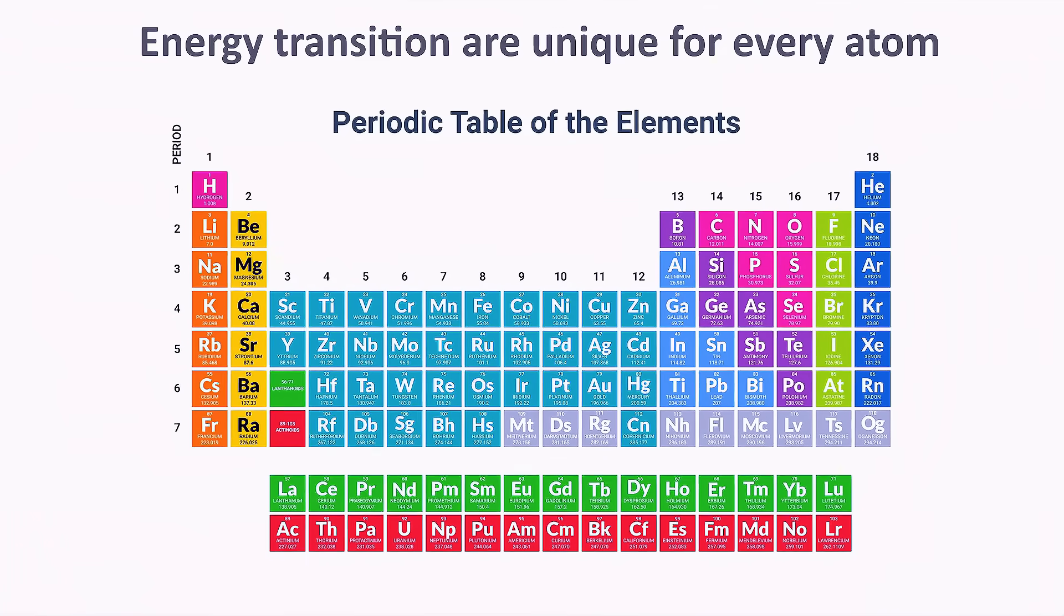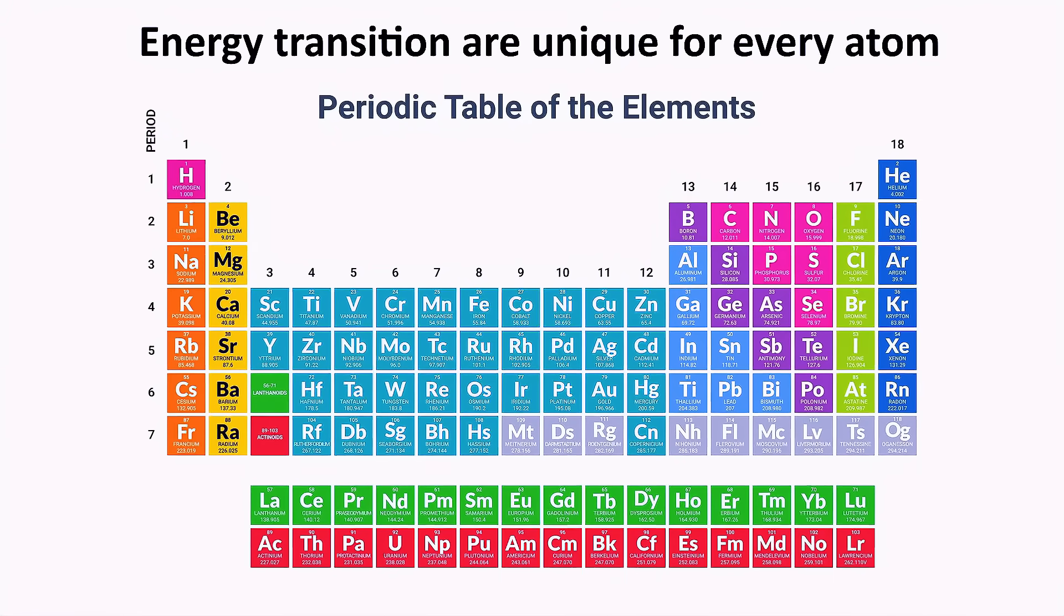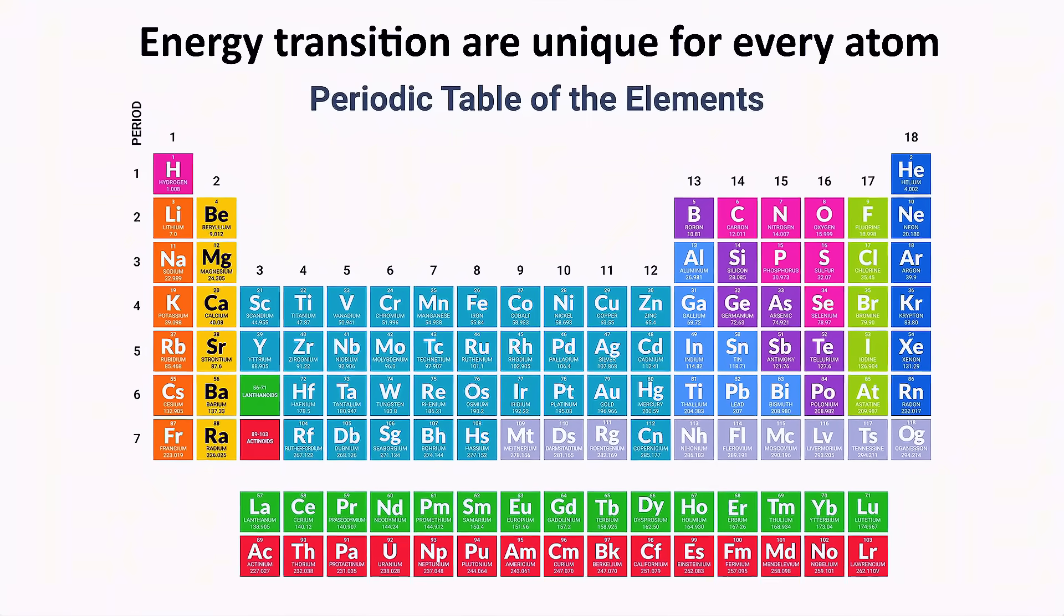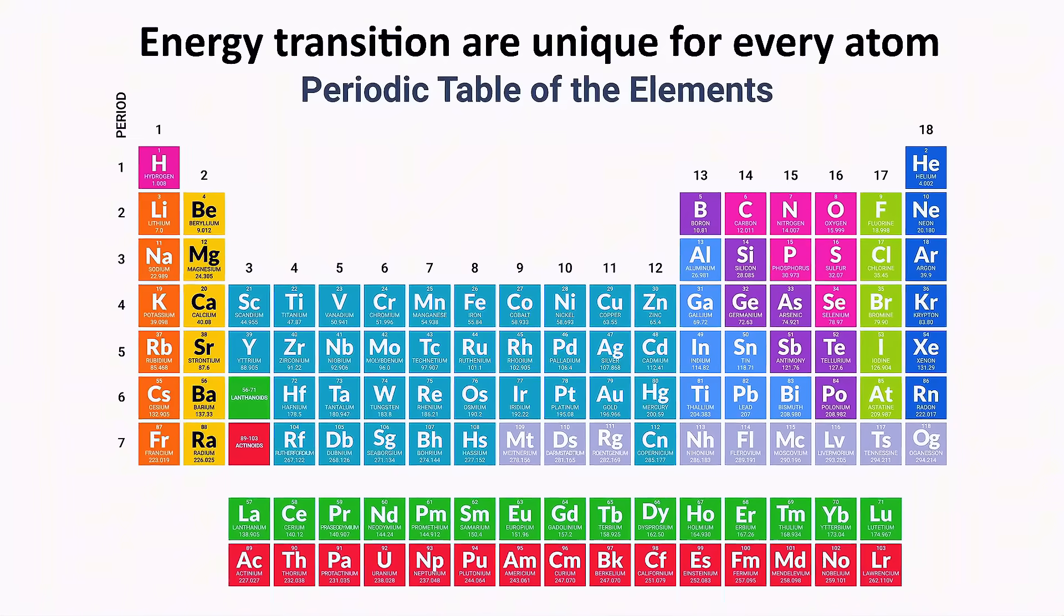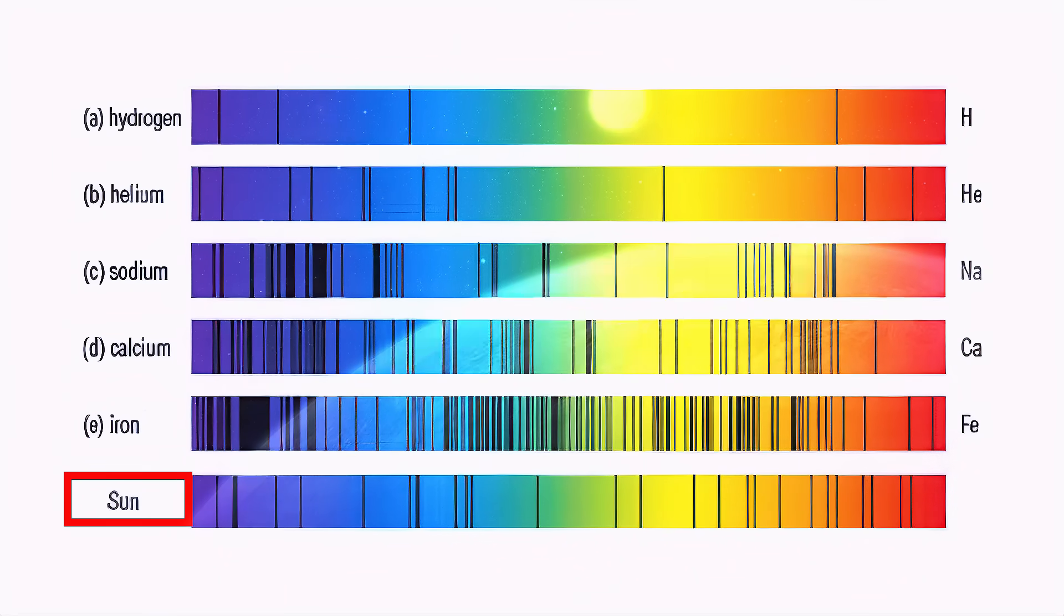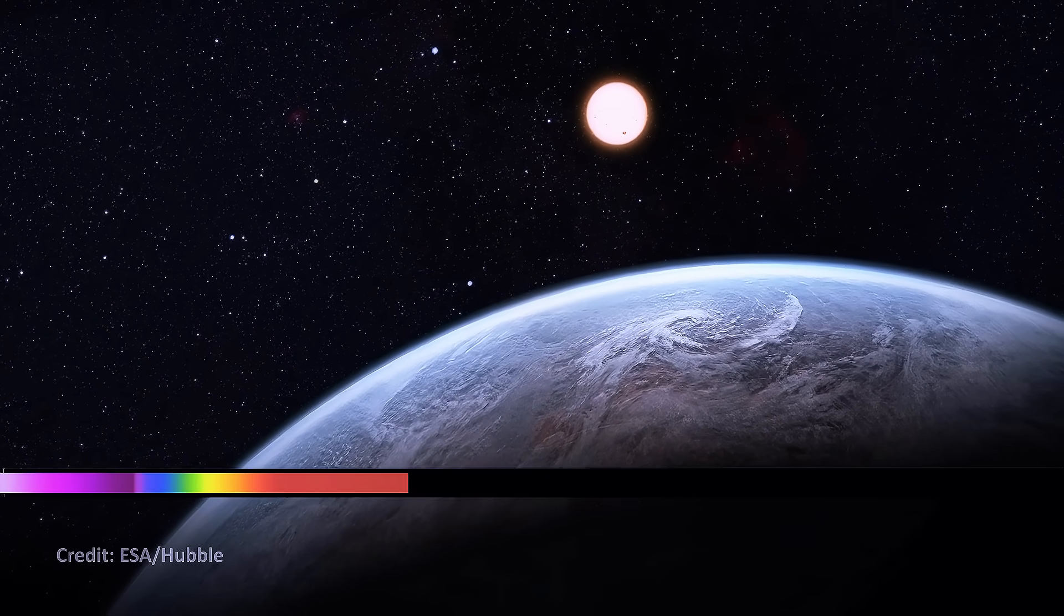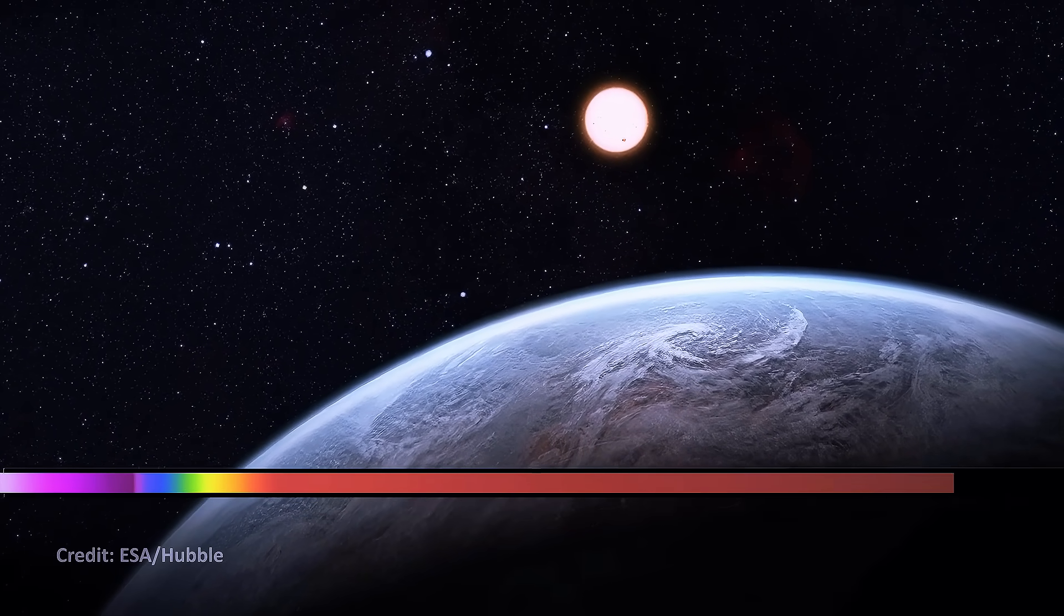What's remarkable is that these energy transitions of electrons in any atom, when going from one energy level to another, are unique for every element. It's determined by the number of protons in the nucleus. They act as atomic fingerprints producing distinct spectral lines that scientists can use to identify elements in stars, galaxies and even distant planets. It's like decoding the makeup of the universe by reading its light.